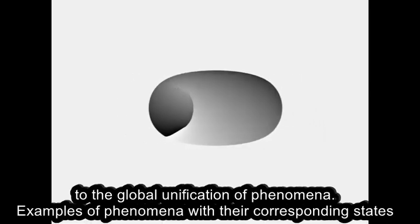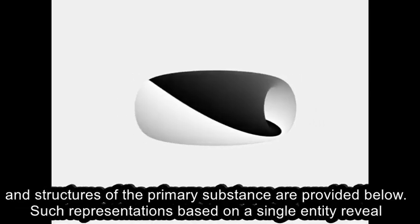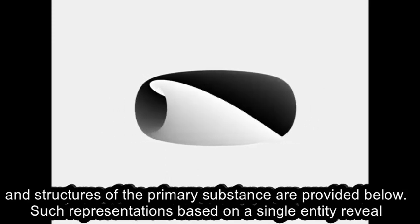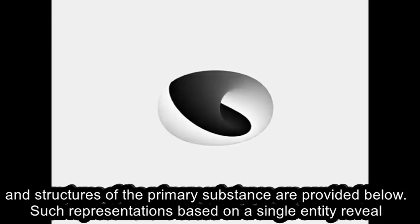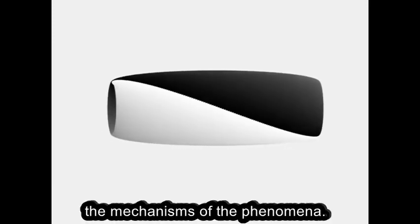Examples of phenomena with their corresponding states and structures of the primary substance are provided below. Such representations based on a single entity reveal the mechanisms of the phenomena.